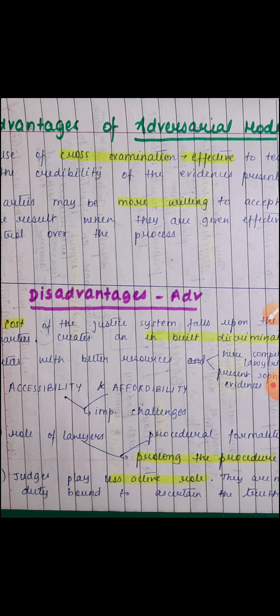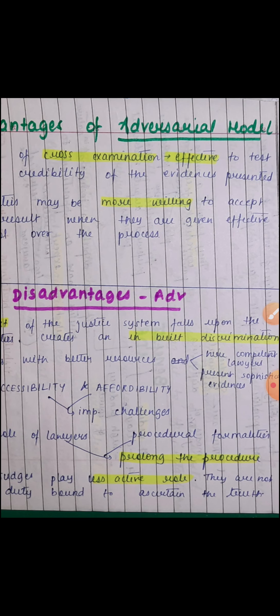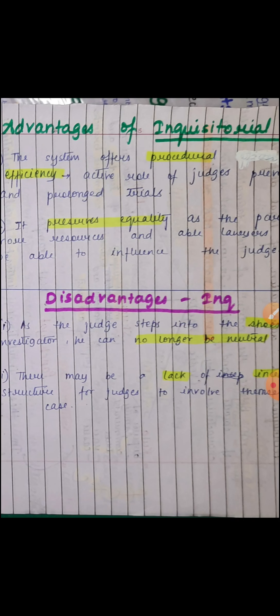The role of lawyers is very significant — the fees they charge influence how they argue the case. Procedural formalities also prolong the procedure; cases can last from one generation to the next. The judge plays a less active role and need not ascertain the truth — whatever the lawyers say, on that basis the judge decides the case. Justice often doesn't matter as much as how the lawyers present their case.